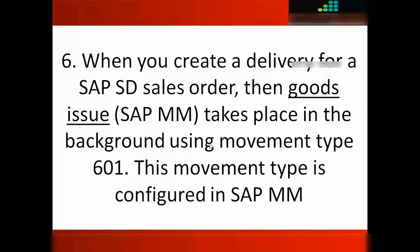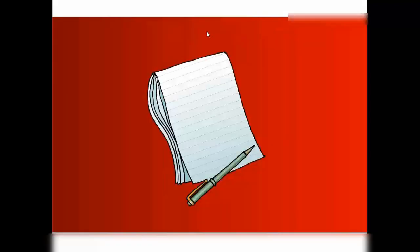When you create a delivery for a SAP SD sales order, a goods issue — which is on the SAP MM side — takes place in the background using movement type 601. This movement type is configured in SAP MM. And that's all for SD-MM integration. Thank you very much for watching this video.